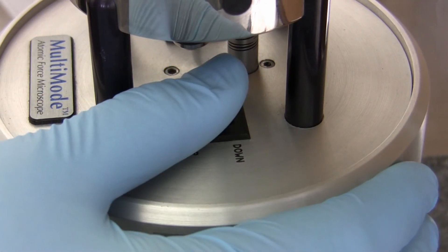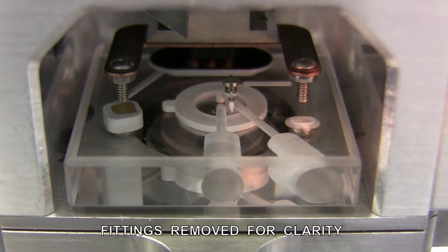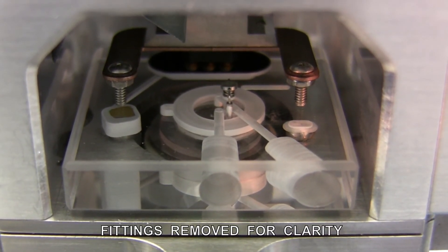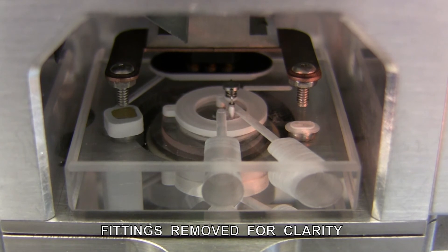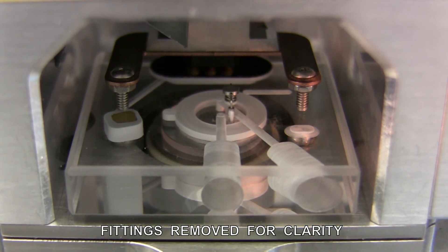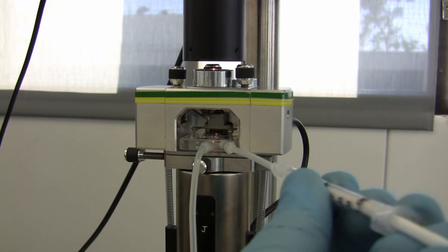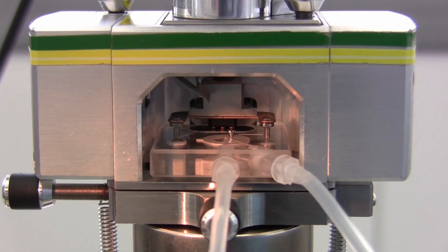Use the motor manual switch to lower the head down to bring the rubber seal into contact with the sample. Take care to leave sufficient space between the probe and the sample surface. Inject the liquid into the cell until the fluid level fills the cell and drains away from the exit port.